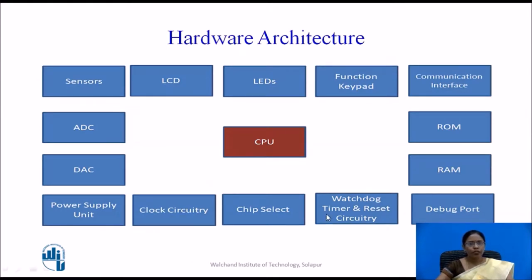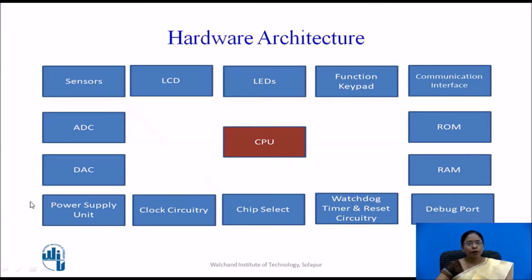In the hardware architecture, the CPU is at the center — it is the heart of the hardware architecture. The different blocks include sensors, LCD, LED displays, functional keypad, communication interface, memory unit (RAM and ROM), debug port, watchdog timer and reset circuitry, chip select, clock circuitry, power supply unit, analog-to-digital converters (ADC), and digital-to-analog converters (DAC).